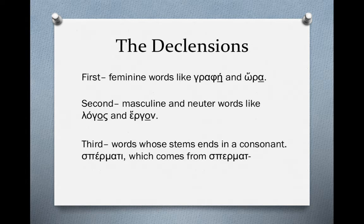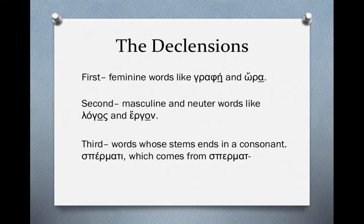Third declension is what we're concerned with in this lesson — these are words whose stem ends in a consonant. First and second declension nouns make up the majority of nouns in the New Testament, but there is a big handful of third declension nouns. The difference is that first and second declension stems end in a vowel — eta, alpha, or omicron — while third declension stems end in a consonant. So if we take a word like spermasin or sperma, the stem is spermat-, ending in a tau and not a vowel.